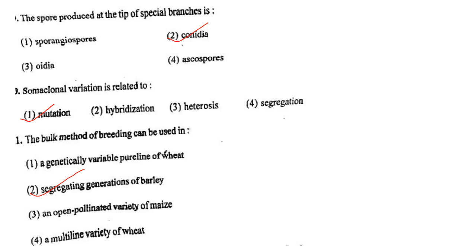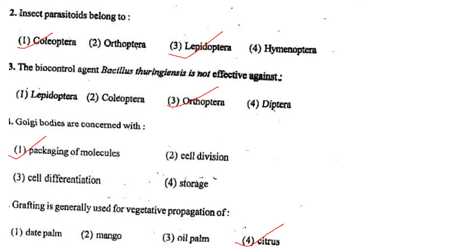Next one: The bulk method of breeding can be used in option 1, a genetically variable pure line of wheat; option 2, segregating generations of barley; option 3, an open pollinated variety of maize; option 4, a multi-line variety of wheat. Answer is option 2: segregating generations of barley.